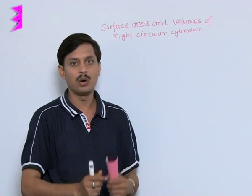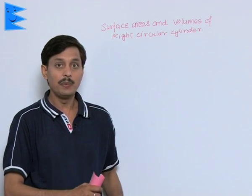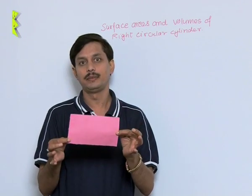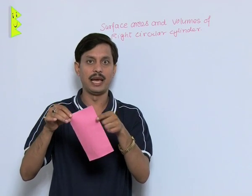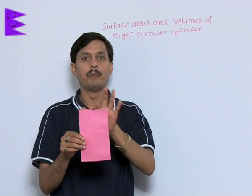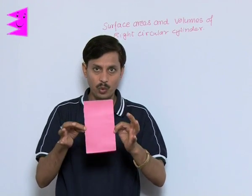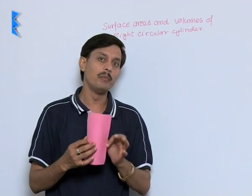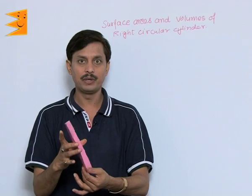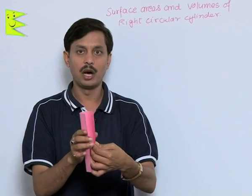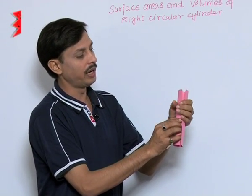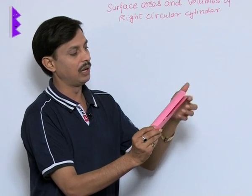I want to tell you how a cylinder can form. If you have any rectangular piece of paper, suppose the length is A and breadth is B, there are four ways to make a cylinder with this piece of paper. The first way: you can roll it along its breadth. If you roll it along its breadth, then a cylinder will form.